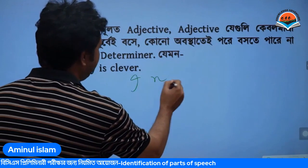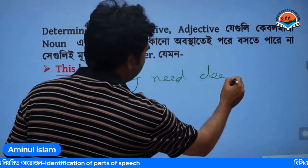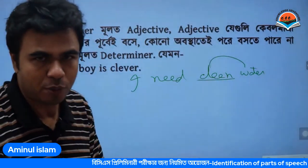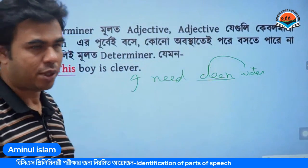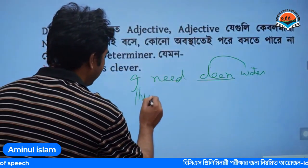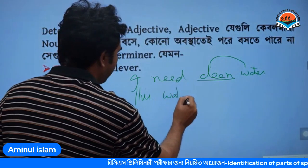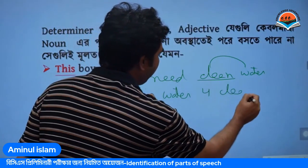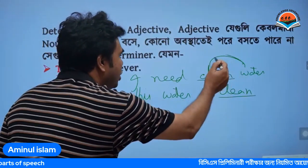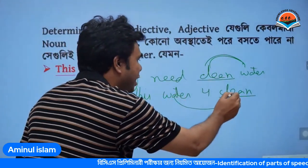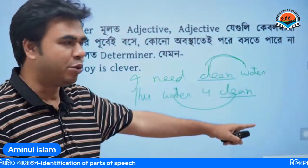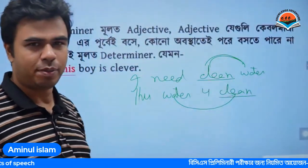I need clean water. Clean water — I use noun phrase. I need clean water. Clean water is in a noun phrase. Clean is a noun modifier, and in other sentences clean is also used as an adjective, which modifies the noun. This is the first question.